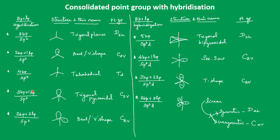If you know the lone pairs, you can change the structure and come to know the point group. If two lone pairs are there in SP3, you add two lone pairs and it becomes a bent shape again. Bent shape means the point group is C2V. Wherever the bent shape comes, the point group will be C2V only.